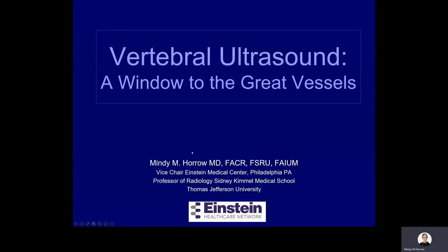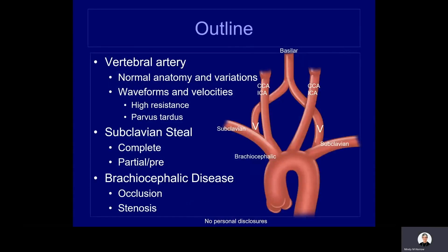This lecture is about the vertebral artery as a gateway to the great vessels and other abnormalities in the neck. The outline covers anatomy and variations of the vertebral artery, the kinds of waveforms one may see, subclavian steal both complete and partial, and a discussion of brachiocephalic disease. I have no personal disclosures.